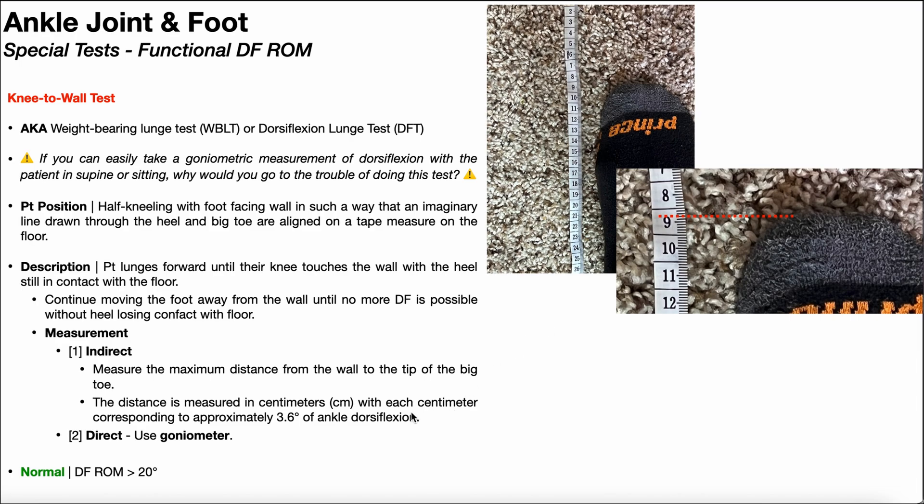And note that each centimeter corresponds to approximately 3.6 degrees of ankle dorsiflexion. So the indirect calculation would be as such. My wall to hallux distance was 8.3 centimeters. So my dorsiflexion range of motion is approximately 8.3 centimeters times 3.6 degrees per centimeter. And then I multiply 8.3 times 3.6, and I get approximately 29.88 degrees. I'd probably just go ahead and round that up to 30 degrees. 30 degrees dorsiflexion in the closed chain.